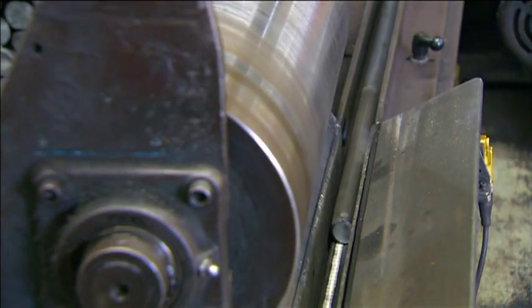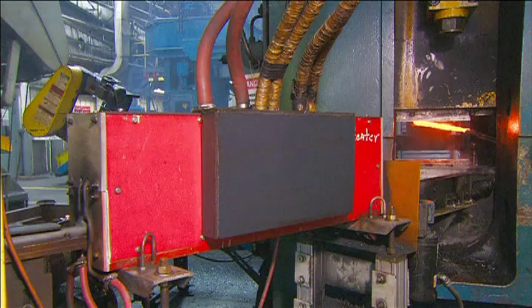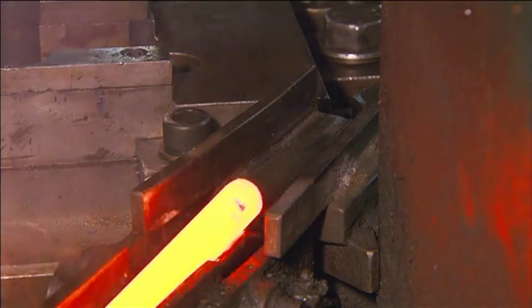One by one, a machine feeds the billets into an induction heater. It heats them to about 1,000 degrees Celsius, then sends them into a forging press.